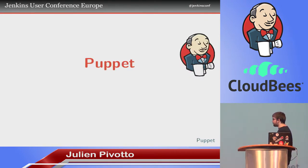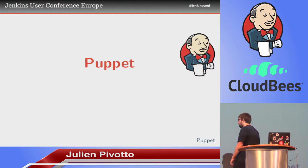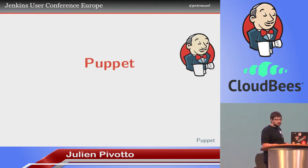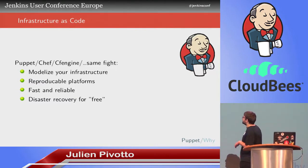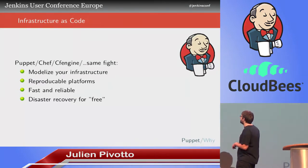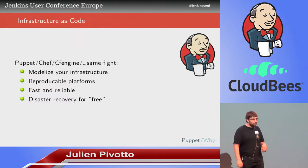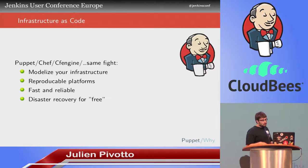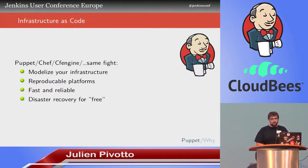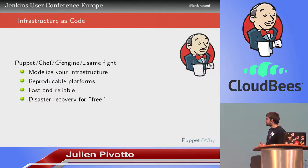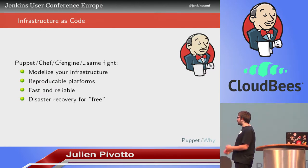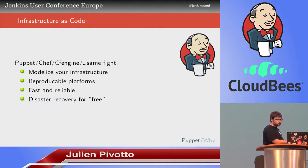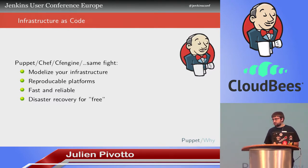And then comes Puppet. We are using Puppet all over the place, but what I will tell you works with all the alternatives — Puppet, Chef, CFEngine — it's the same fight. You modelize your infrastructure, you make reproducible platforms. It is fast, it is reliable, and you get disaster recovery for free. If something goes wrong, you can pop up a new server, just provision it, and it will just work.